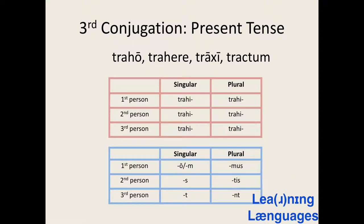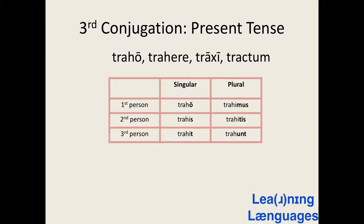Let's conjugate the verb traho in the present tense. Its present tense stem is trahi-. The third conjugation differs from the first and second because to form the present tense stem we remove the -ere ending of the present infinitive and add an -i, whereas with first and second conjugation verbs we simply remove the -re from the present infinitive. Here is the present tense conjugation: traho — I drag; trahis — you singular drag; trahit — he, she, or it drags; trahimus — we drag; trahitis — you plural drag; trahunt — they drag. Notice that the I is not present in the first person singular and third person plural forms.